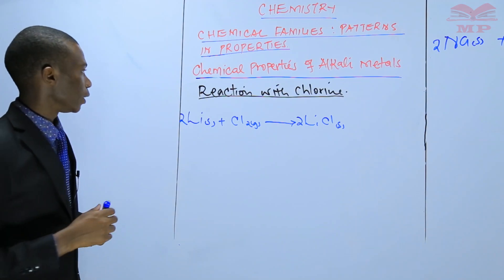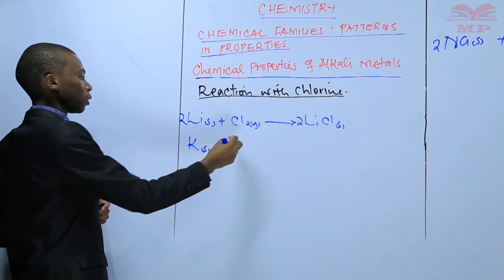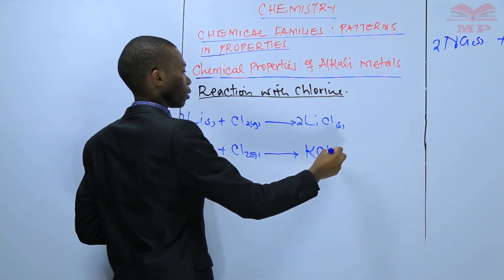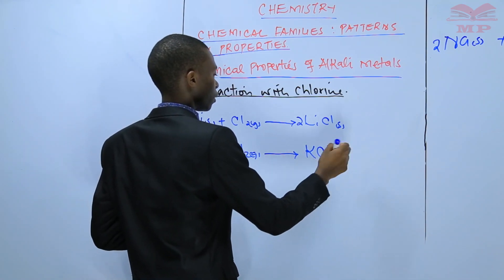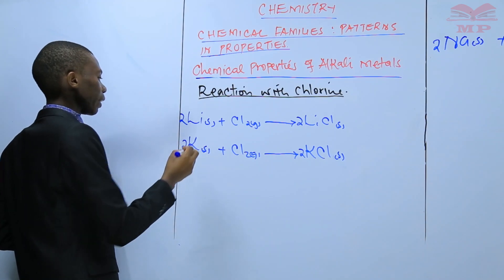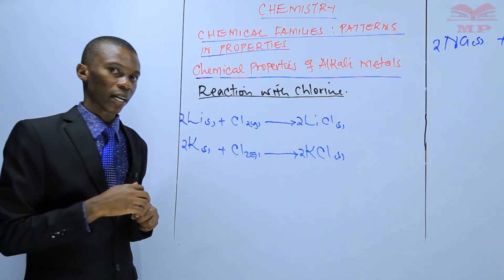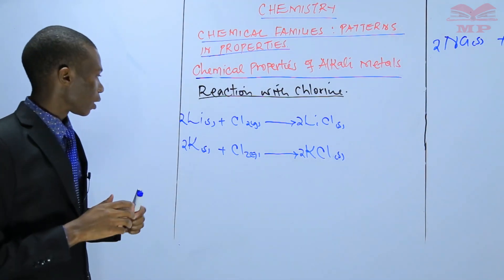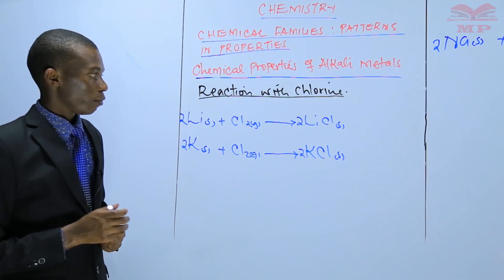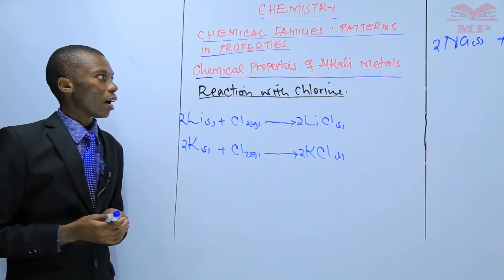The same thing happens to potassium — it reacts with chlorine, leading to the formation of potassium chloride. However, this reaction is extremely explosive or violent, and therefore should never be tried. The reaction between chlorine and potassium is violent, so you should not attempt it because potassium is very reactive.